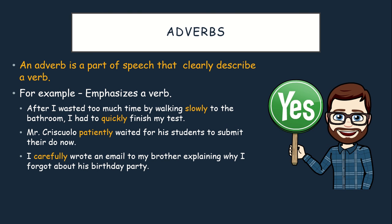Adverbs are words that more clearly describe a verb. For example, they put an emphasis on a verb. 'After I wasted too much time by slowly walking to the bathroom, I had to quickly finish my test.' Slowly describes how I walked, and quickly describes how I finished the test. Notice it's describing the verb, not the noun. 'Mr. Criscolo patiently waited for his students to submit their do-now.' Waited is the action, so patiently describes that. 'I carefully wrote an email to my brother explaining why I forgot about his birthday.' Carefully describes the verb, which is wrote.